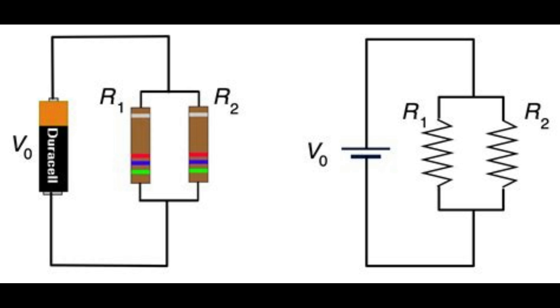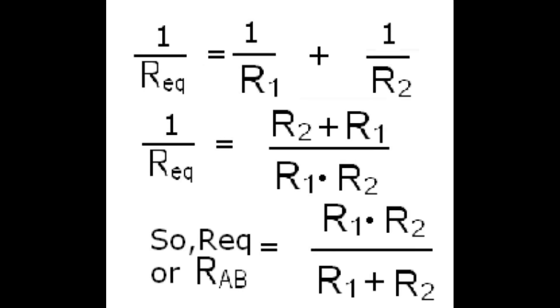If you want to reduce the resistance value, connect them in parallel. I will give you the equations also. In series connection, the resistance values are added. In parallel connection, it follows the formula shown here. If you have two values R1 and R2 connected in parallel, their value is equivalent to R1 times R2 divided by R1 plus R2.